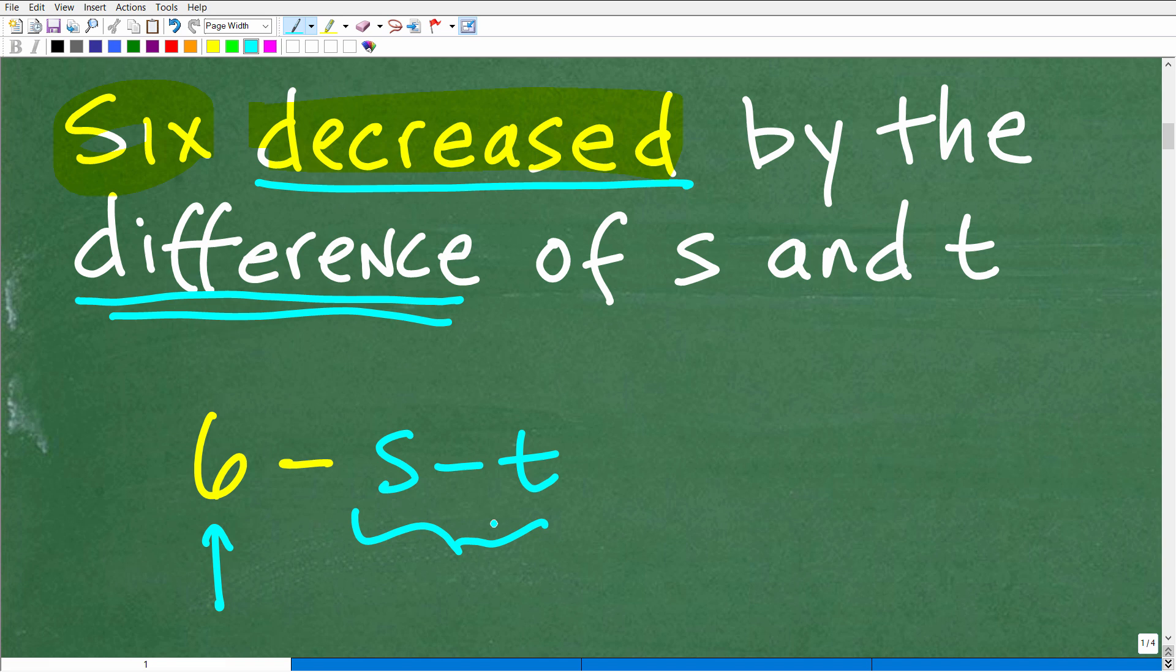But there's a little detail here that confuses a lot of students. Okay, and that is grouping symbols. Okay, we have to be very explicit that the difference of S and T, we've got to put this in parentheses. Okay, so this is six decreased by the specific difference of S and T. Okay, so this is S minus T.